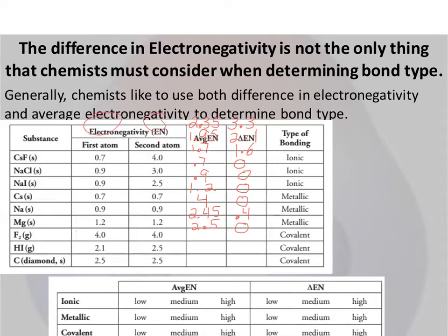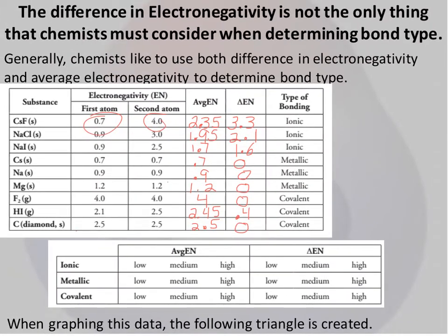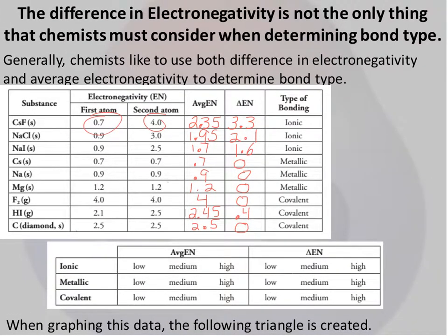Looking up there in our ionic realm over here, we can see that if we have a medium average here and then a high change, that that is an ionic bond. Then if we have for the metallic, we have a low change, and then we have a low average.